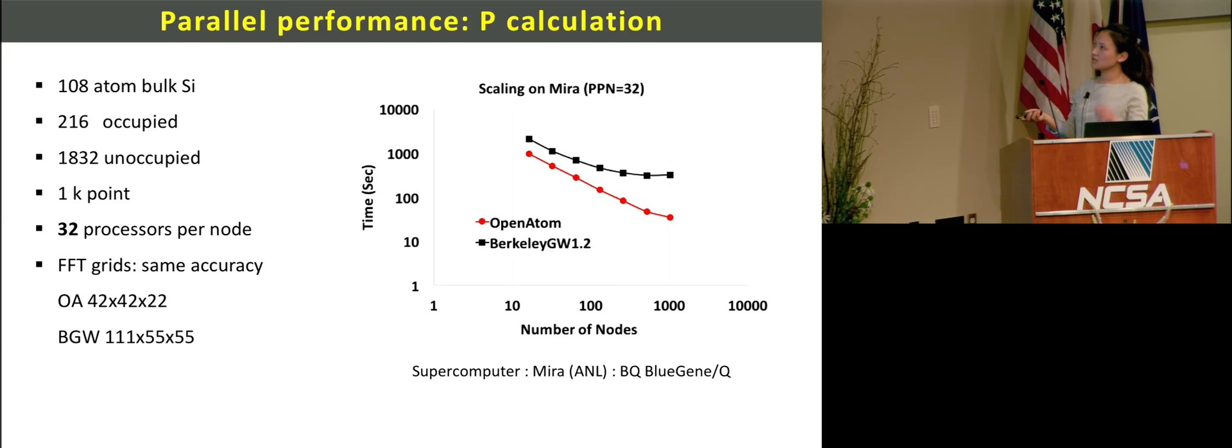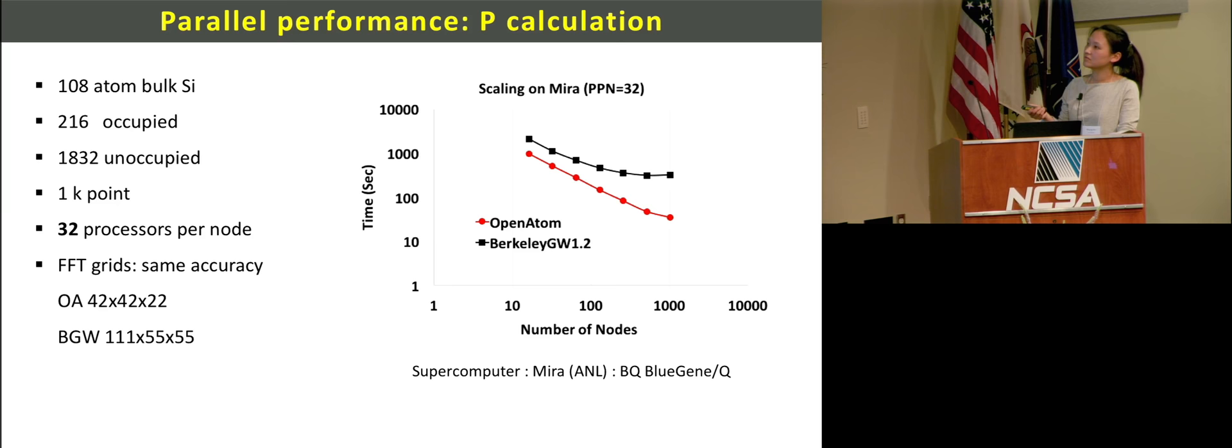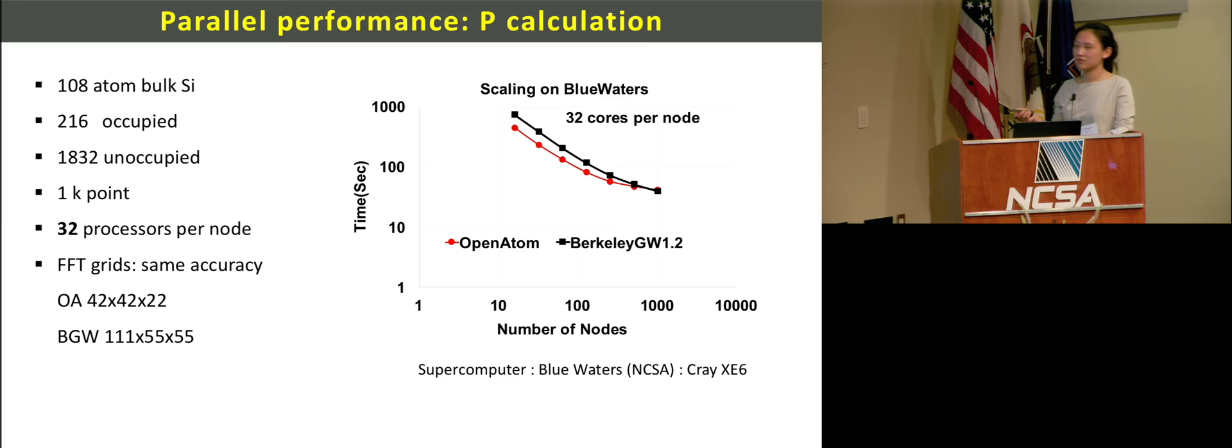This is the parallel performance of our P calculation. We benchmarked on Mira. This red is the OpenAtom result, and this black is Berkeley GW, which is also a popularly used GW software. The system is 108 atoms, 2000-ish states. On Mira, OpenAtom scales very well up to like 1000 nodes, but Berkeley GW is kind of flat at this point. However, on Blue Water, we found that OpenAtom scales a little bit differently from Mira. We have been discussing about what happens, and we're going to discuss after this presentation too. That's something we need to know moving forward. We wrote parallel software that scales well, which is good.